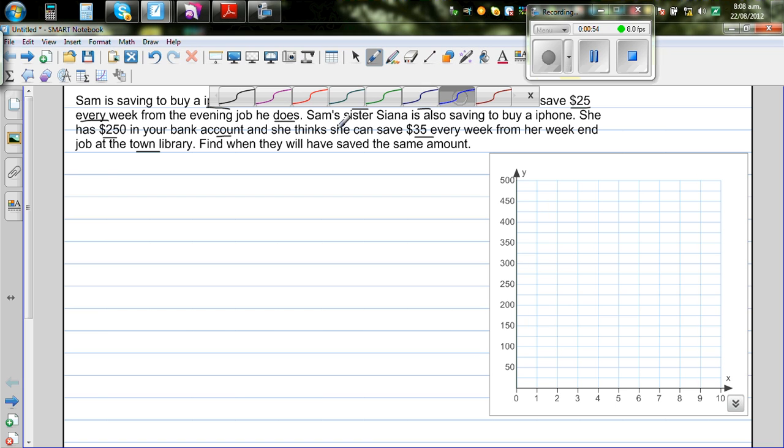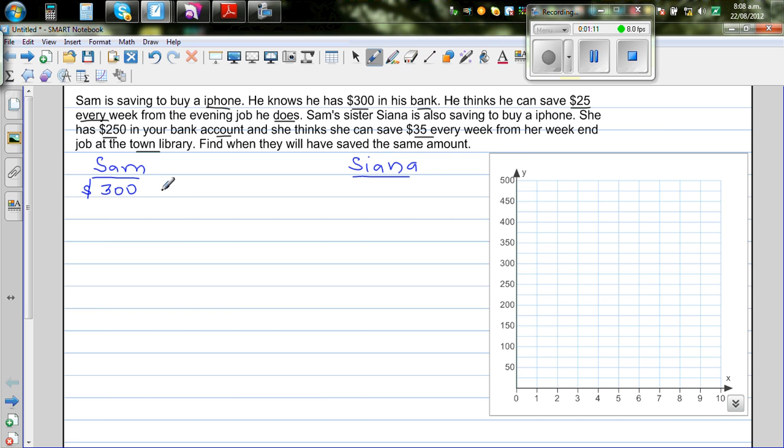Sam and Sienna are brother and sister. The first thing I would like to do is write what's the information. Sam has $300 in his bank and he can save $25 every week. For Sienna, she has only $250 in the bank and she can save $35 every week.